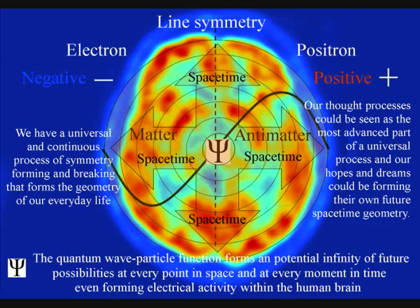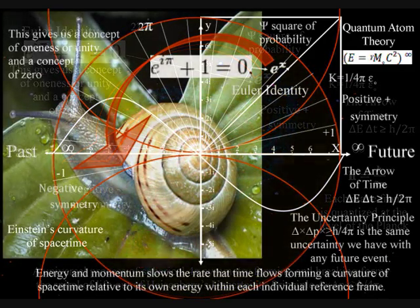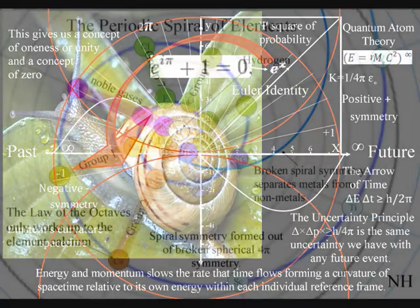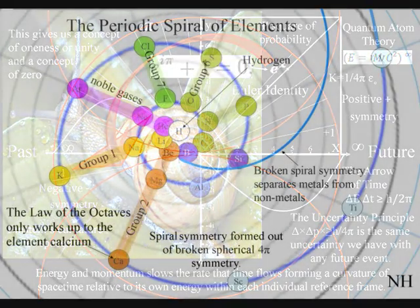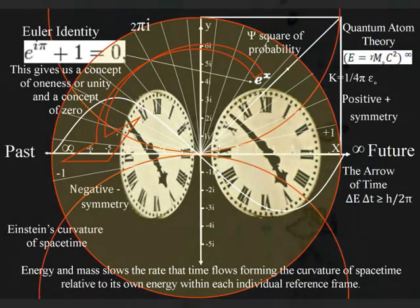This process is totally universal and interactive. From the largest object to the smallest creature, right down to the smallest element of the periodic table, each will slow the rate that time flows, forming a curvature of spacetime relative to its own energy or mass.